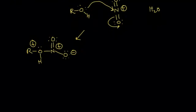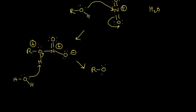We've almost formed our nitrate ester. All we have to do now is an acid-base reaction to remove this proton from our oxygen. Water is a decent base, so a lone pair of electrons on the oxygen takes this proton, leaving these electrons behind, and we form our nitrate ester — R with an oxygen and then NO2. I think this is the correct mechanism, but I'm not 100% sure.